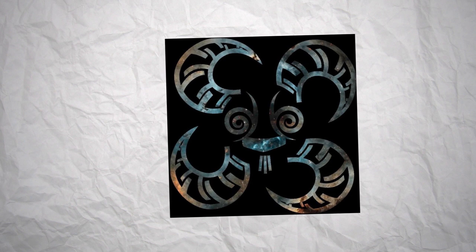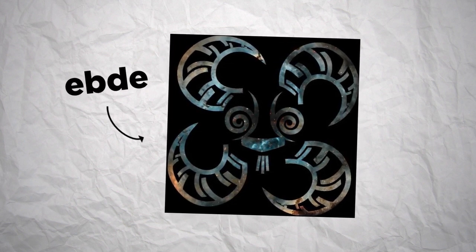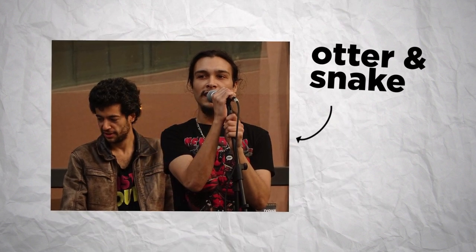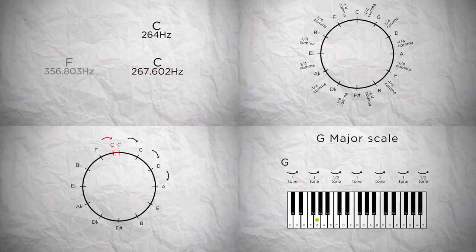Just before we begin, I would like to thank my good friend Abdi for helping me write the examples for the harmonization in this episode. If you like hip-hop or trippy electronic beats, he produced an EP with an amazing MC under the name of Otter and Snake. Their EP should be released on the 22nd of September, the link is in the description, so go check it out.